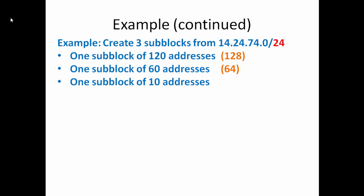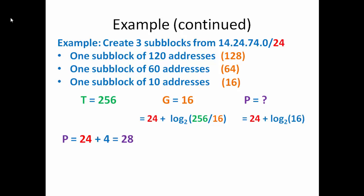Finally, we'll go to our last subblock or 10 addresses. Can you guess what number of addresses we need to assign to this subblock? Well, I hope you guessed 16 because that is correct. So we have 16. 256 divided by 16 is 16, and log 2 of 16 is 4. So 2 raised to the power of what is 16? That's 4. And if we add 24 plus 4, we get 28.